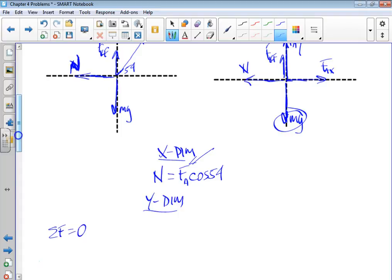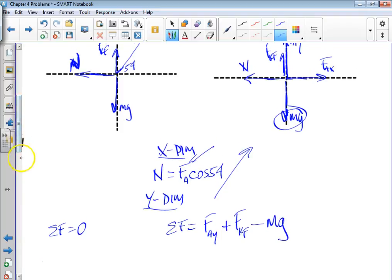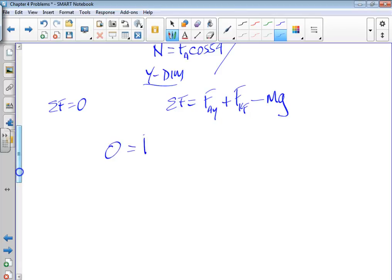Y dimension. Still moving at constant velocity, so the net force is zero. Net force from our diagram up here is going to be in the y. Upward is going to be—applied force in the y is up. Kinetic friction is also up. And the one downward force is going to be weight. That means zero is equal to F_a,y plus, notice, plus mu kinetic times the normal force minus mg. But we can fill in some of these things. The applied force in the y is F_a sine 54 plus mu kinetic times the normal force, which is F_a cosine 54 minus mg.